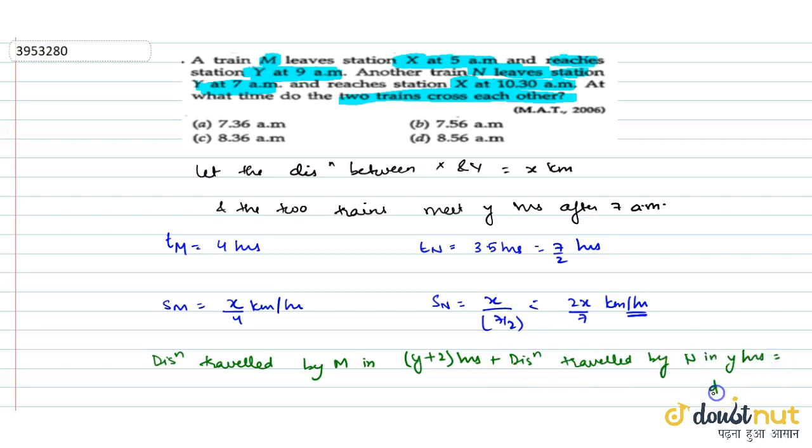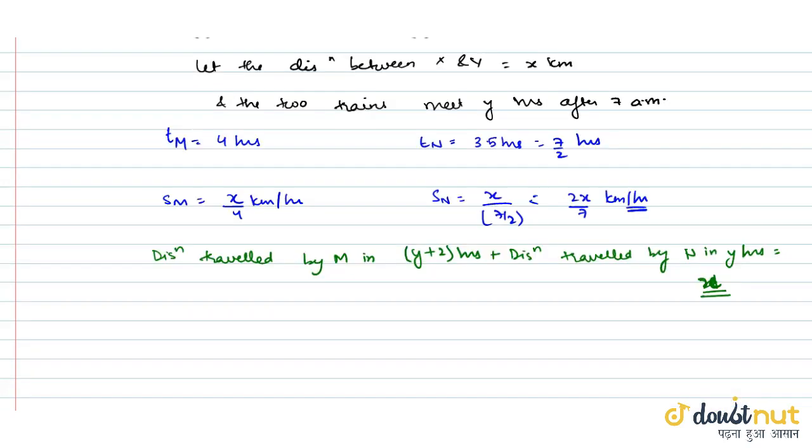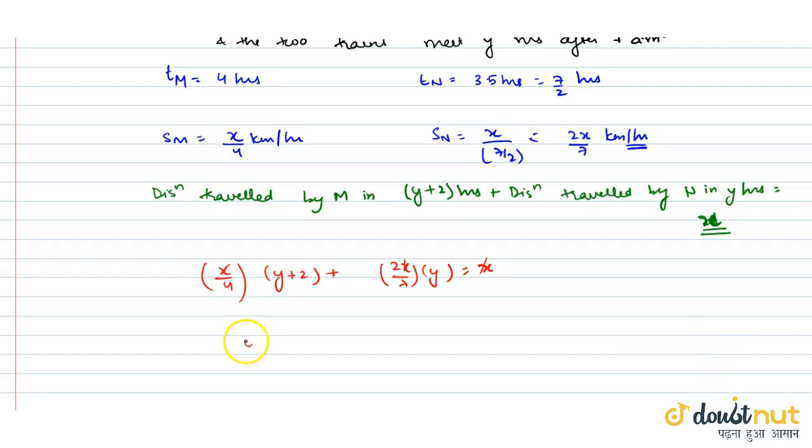This total equals the total distance, that is x km. That means x/4 × (y+2) + 2x/7 × y = x. So x cancels out, and we have (y+2)/4 + 2y/7 = 1.